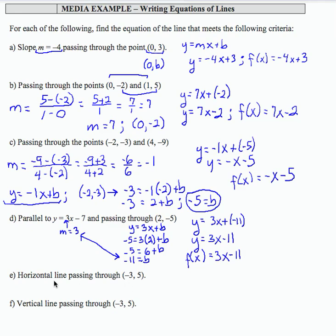Part E: if I want the equation of the horizontal line that passes through (-3, 5), that's going to be the line for which every output is 5. So the way I say that is y equals 5 or f(x) equals 5.